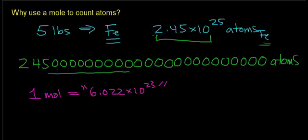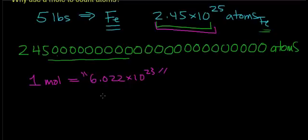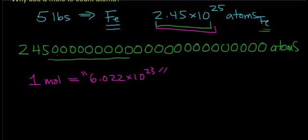So as an example, let's say I'm given this number of iron atoms and I want to figure out how many moles of iron atoms there are in 5 pounds. I already know that there's this many atoms. But to make the number more simple, let's figure out how many moles of atoms there are.